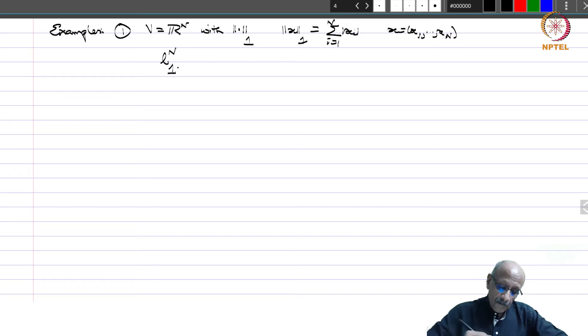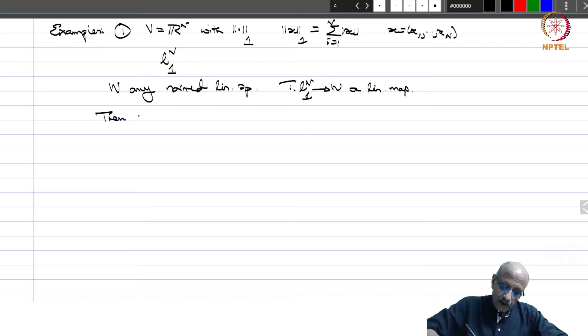W any normed linear space and T from l^n_1 to W a linear map, then T is continuous. So every linear map from l^n_1 into any normed linear space is automatically continuous. How do we show this?